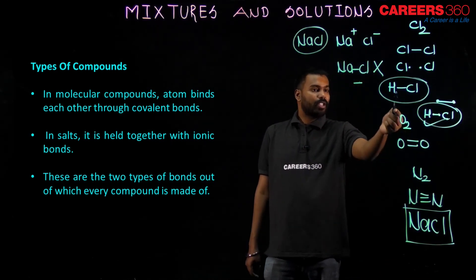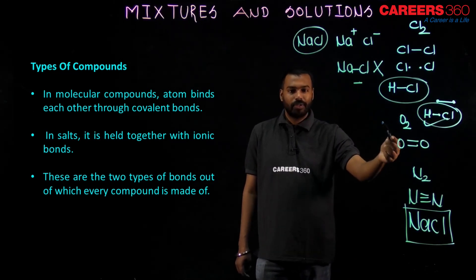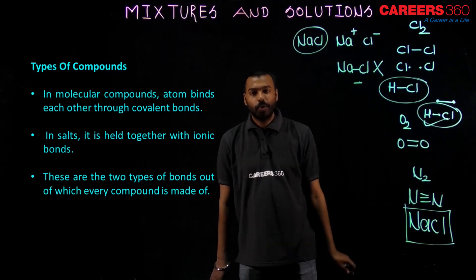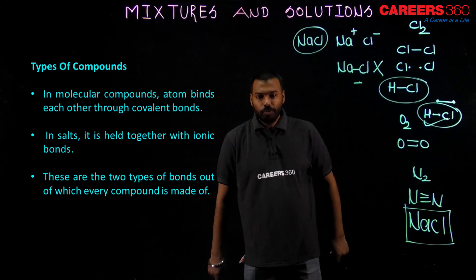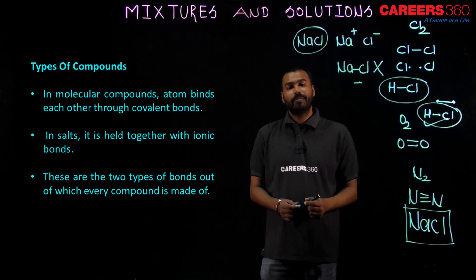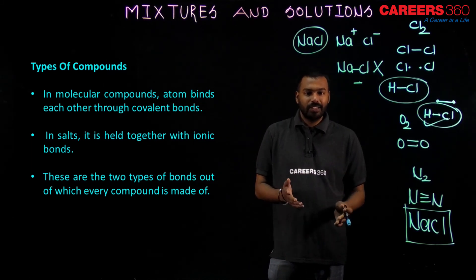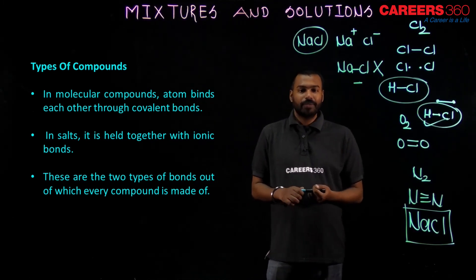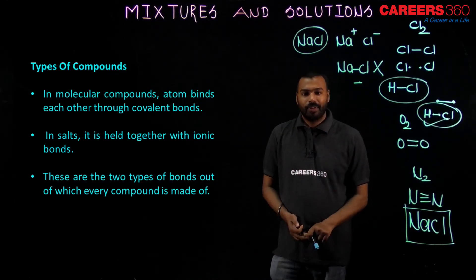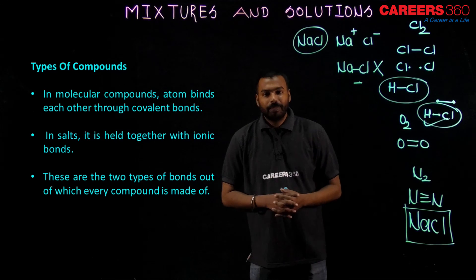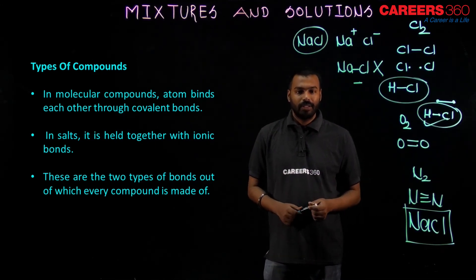NaCl has an ionic bond — a bond formed between ions. To summarize: covalent bond is formed by the sharing of electrons, while ionic bond is formed between ions. These are the two main types of bonds in compounds. Under class 9 and 10, most compounds are either ionic compounds or covalent compounds. In this way, we have completed compounds, their types, and bonding. Thank you.